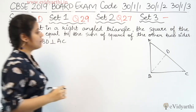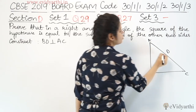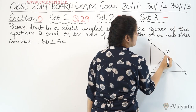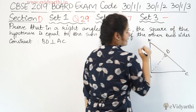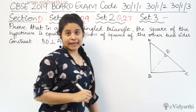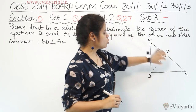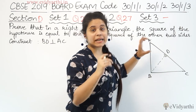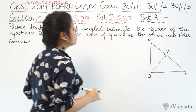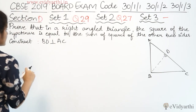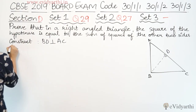यहाँ पे perpendicular है तो मतलब यह जो angles हैं वह 90 degree के हैं. अब यहाँ पे यह जो बड़ा वाला triangle है और यह जो दो छोटी triangles बनी हैं, इनको हम similar prove करेंगे.